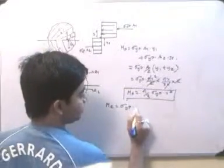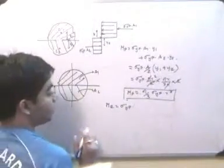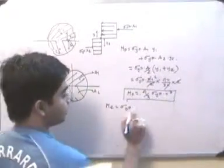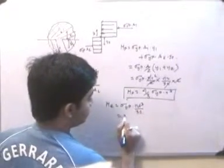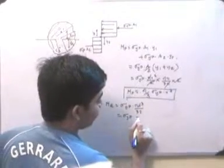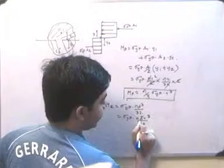And z, or sectional modulus, for some kind of a circular cross section is equal to πd³ by 32, or σyp into πr³ into πr³ by 32. 8 and 32 gets cancelled, so it will be σyp into πr³ by 4.